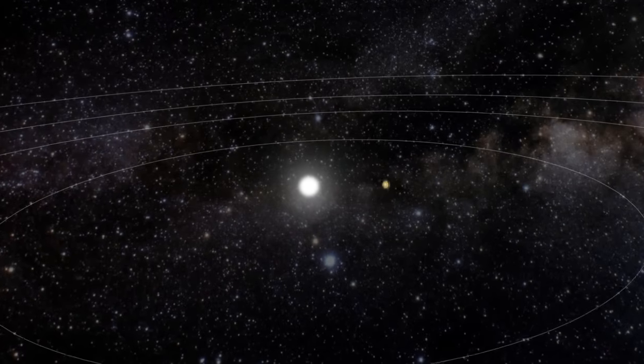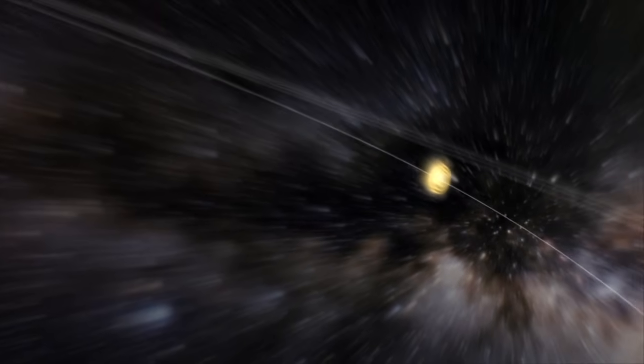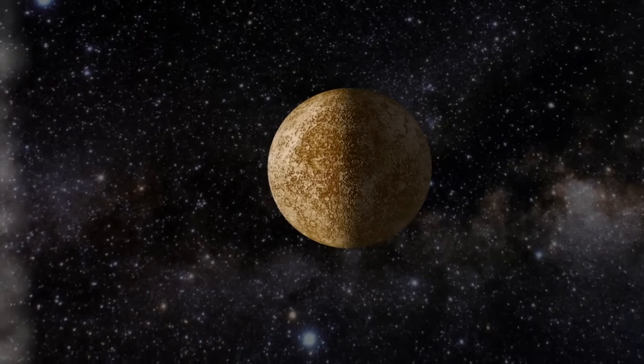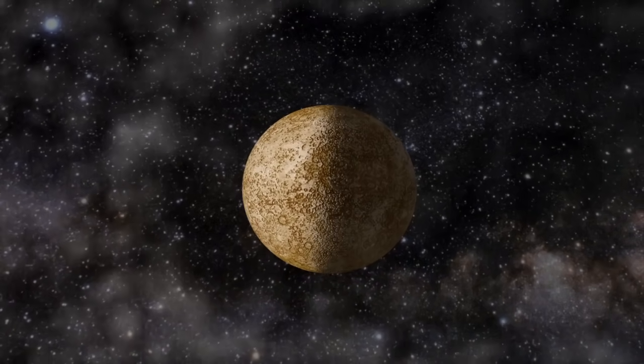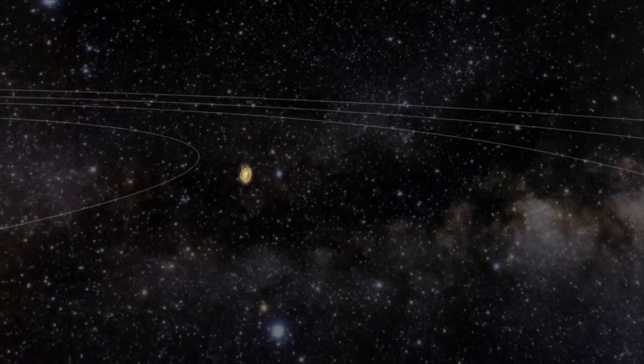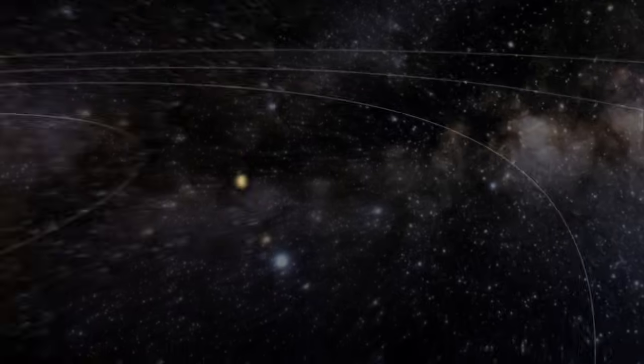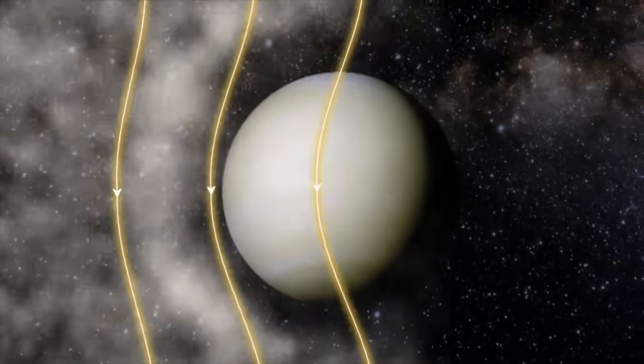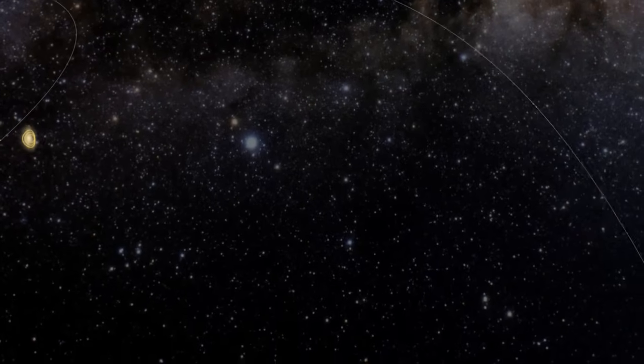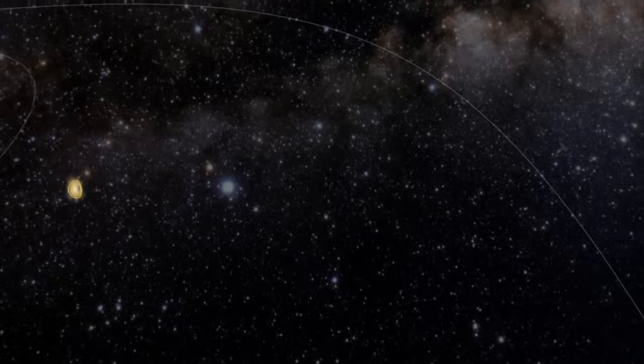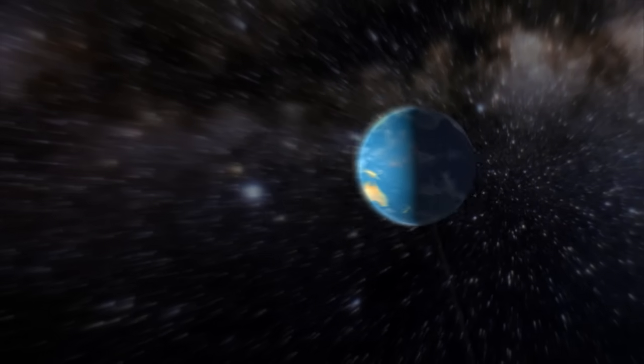The solar storm can reach speeds over 8 million kilometers an hour. After 6 hours, it blows past the planet Mercury. After 12 hours, the planet Venus. And after 18 hours, the solar storm reaches Earth.